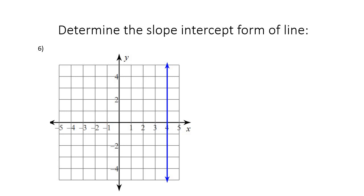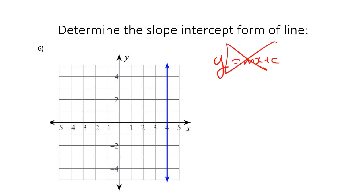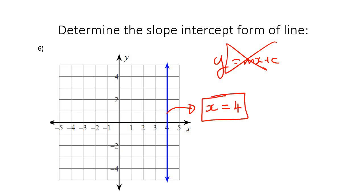Here's the last one for this video. If you look at this line, it's vertical — so you're not going to use y equals mx plus c. Instead, you say: that x value is 4, and in fact, if I look at every x value on this line, it would always be 4. So the equation is x equals 4. That would be the answer for that one.